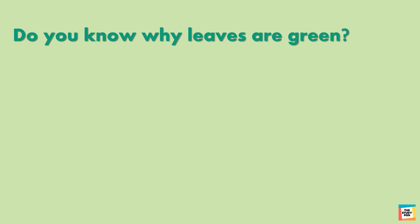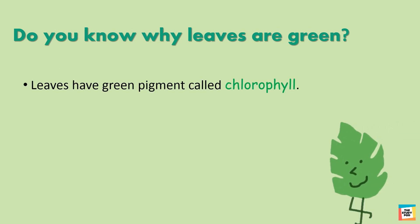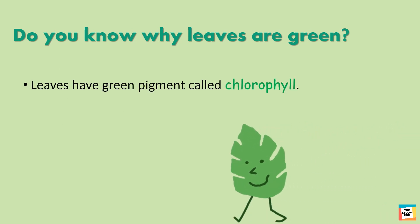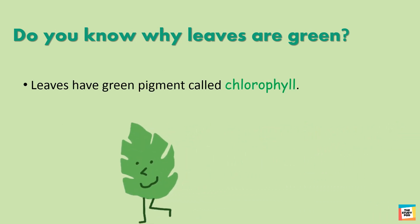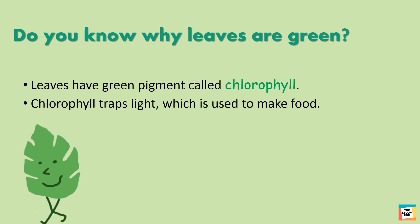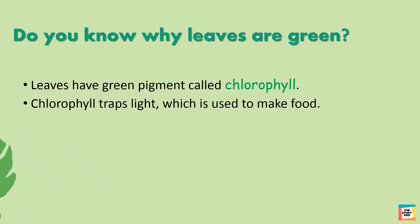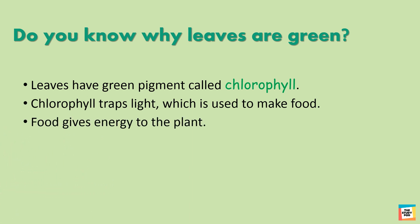Do you know why leaves are green? Leaves have a green pigment called chlorophyll. Chlorophyll traps light, which is used to make food. Food gives energy to the plant.